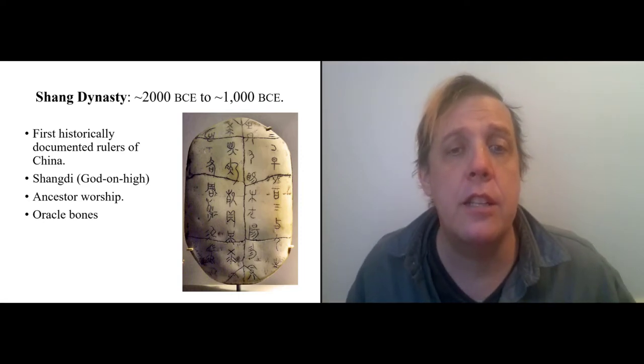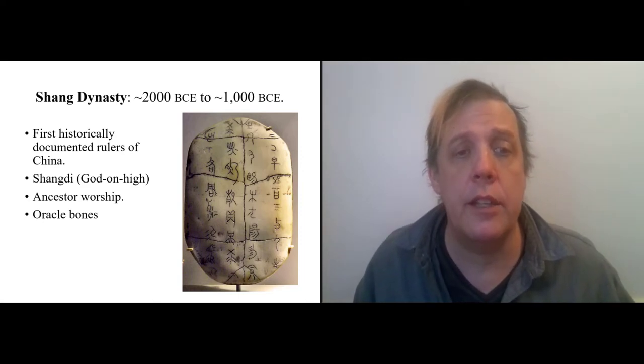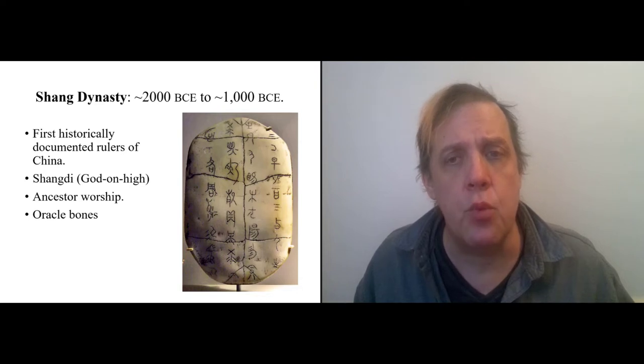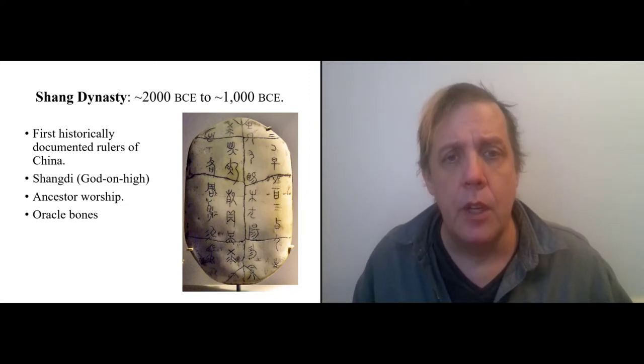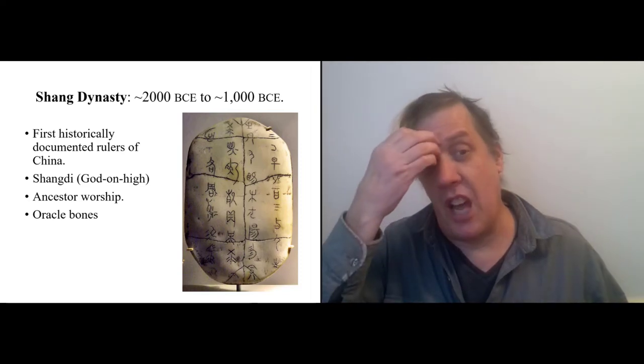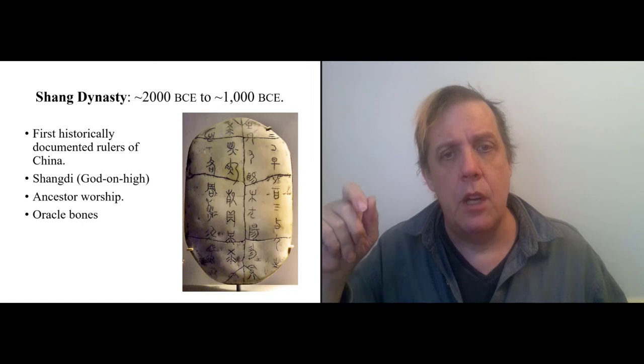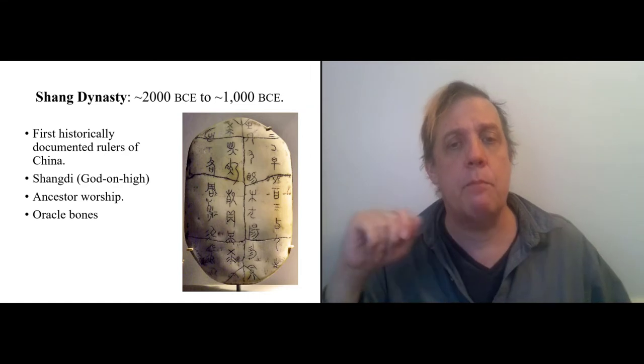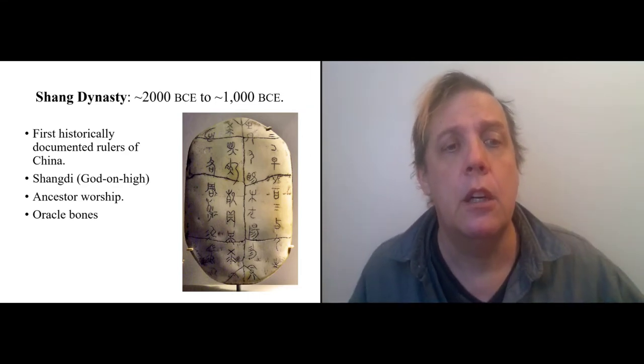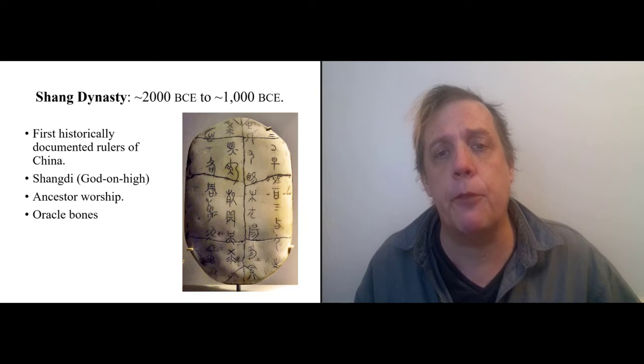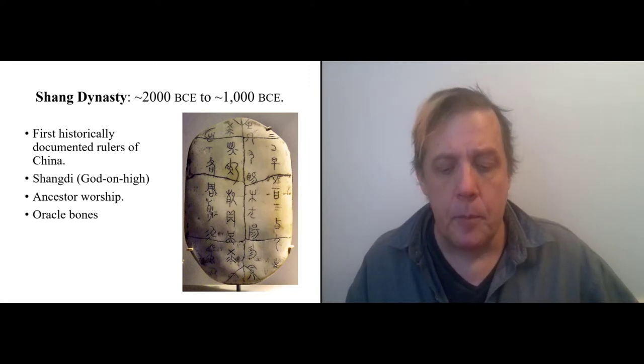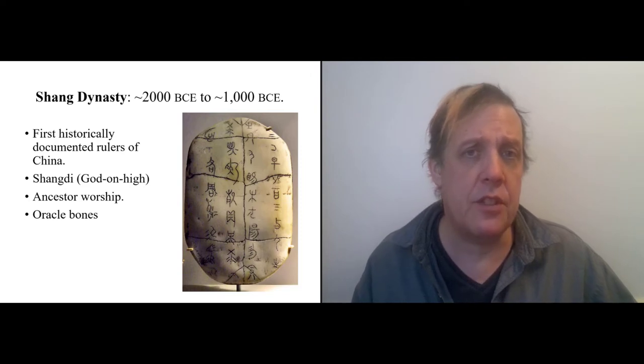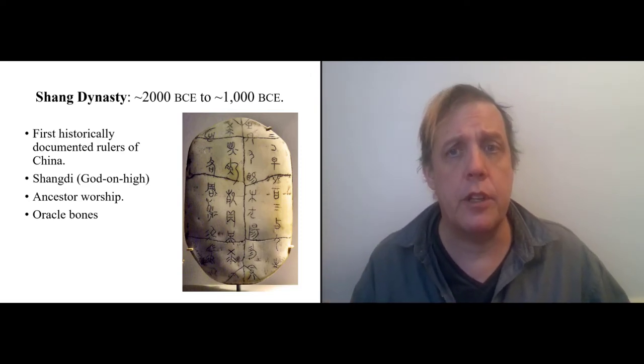The other thing that goes on is we see the beginning of Chinese writing in this period with what are called the oracle bones. And so I've got a visual for one of those now. And these were bits of shell or they weren't always bone, but they had writing on them and then you would break them in a fire and you could predict the future based on the pattern of cracking.